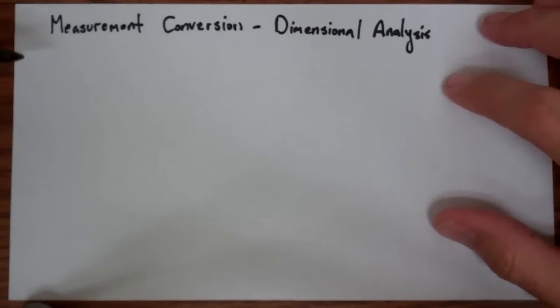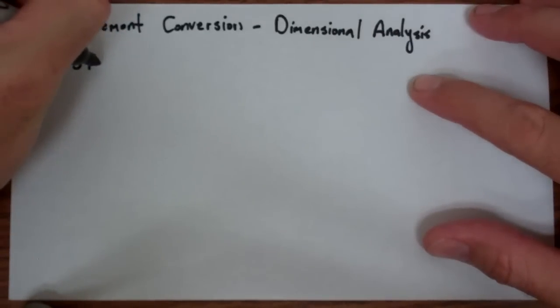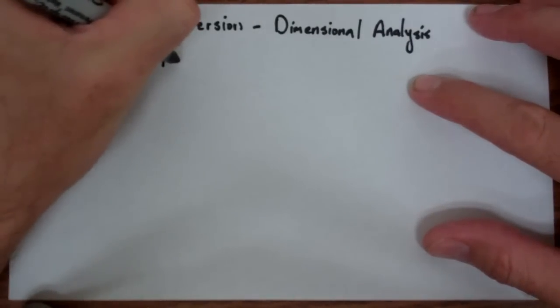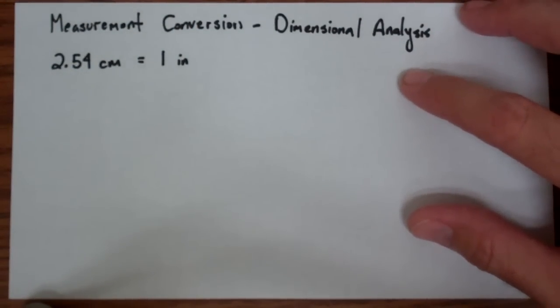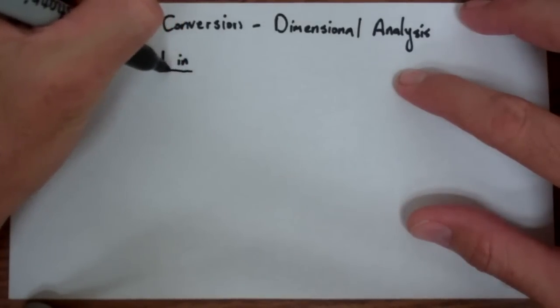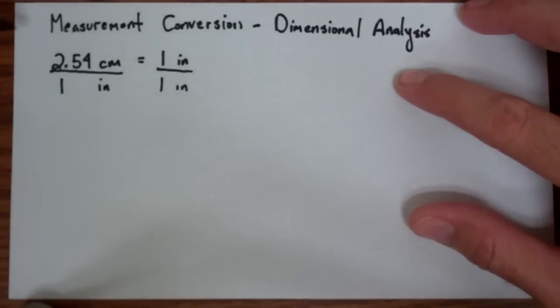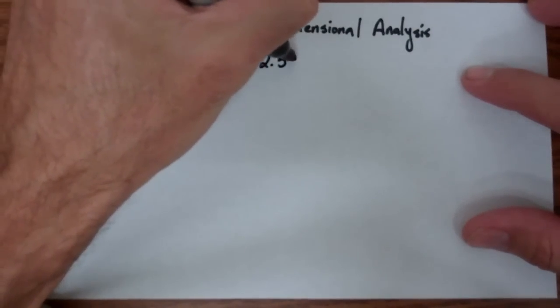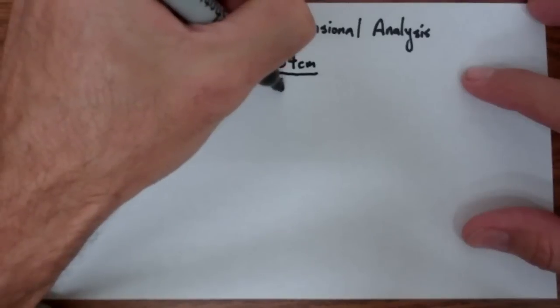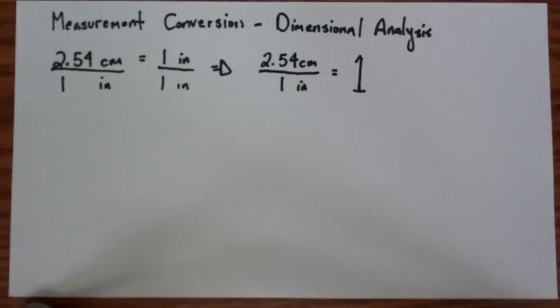So let's say that we have the known conversion of 2.54 cm equals 1 inch. The idea here is that you can divide this side by 1 inch and divide this side by 1 inch. 1 inch over 1 inch is just 1. So the idea is that 2.54 cm over 1 inch is unity, a value of 1. And whenever we multiply by 1, we don't change something's value.